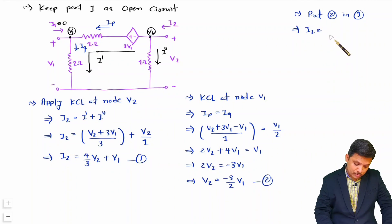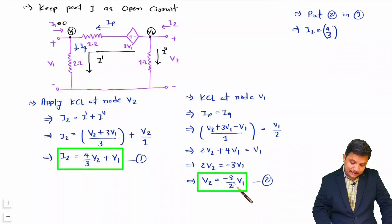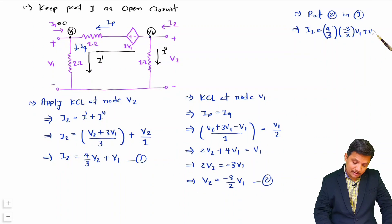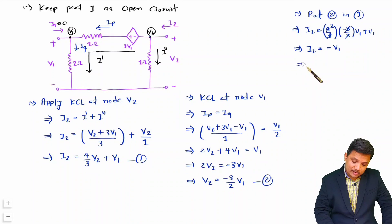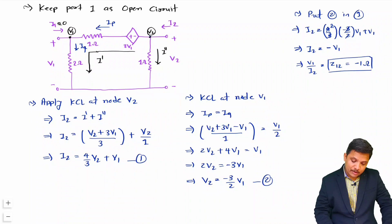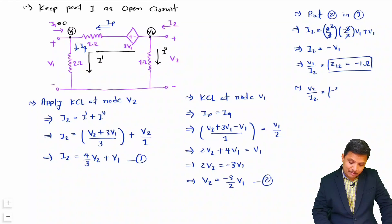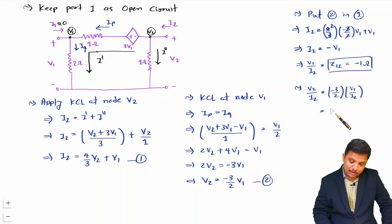Substituting Equation 2 into Equation 1: I2 = (4/3)·(-3/2·V1) + V1 = -2V1 + V1 = -V1. Therefore Z12 = V1/I2 = V1/(-V1) = -1 Ω, the reverse transfer impedance. For Z22: V2/I2 = (-3/2·V1)/(-V1) = 3/2 = 1.5 Ω, which is the output impedance.